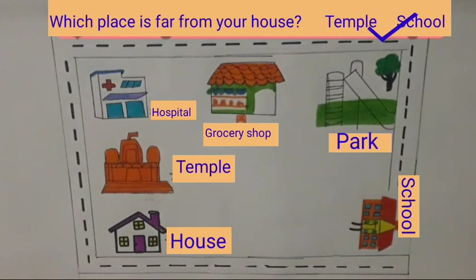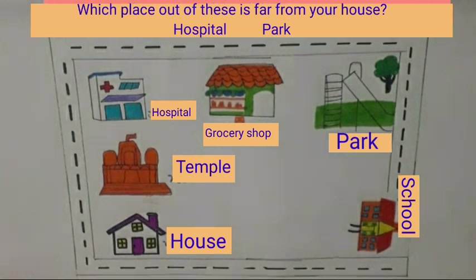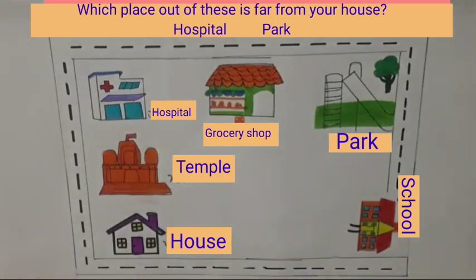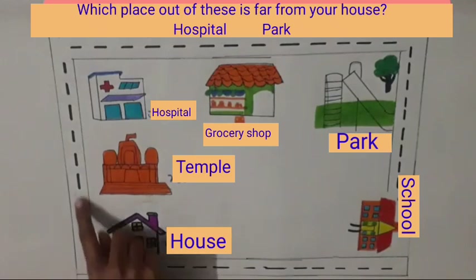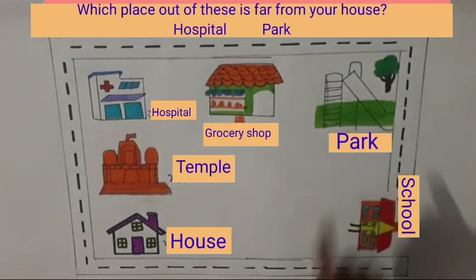Now we will put a tick on this. Which place out of these is far from your house? This is the way to hospital from the house and there are two ways to park — this way and this way. Park is far from your house.